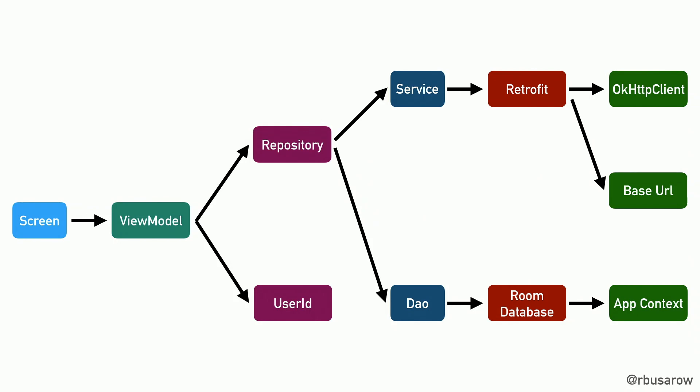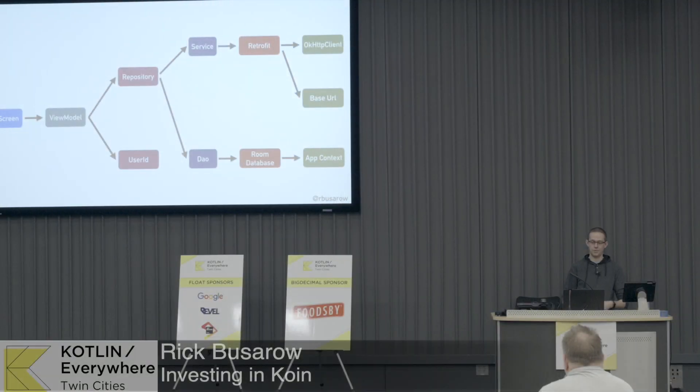As a vehicle to talk about all this, we're going to have a little sample app — a single screen which requires a single view model. That view model is going to depend upon a user ID and a repository. That repository is going to depend upon a service, a DAO — Retrofit and Room. The DAO is going to depend upon the Room database, which depends on the application context. The service needs a Retrofit instance, which itself requires an OkHttp client and a base URL.